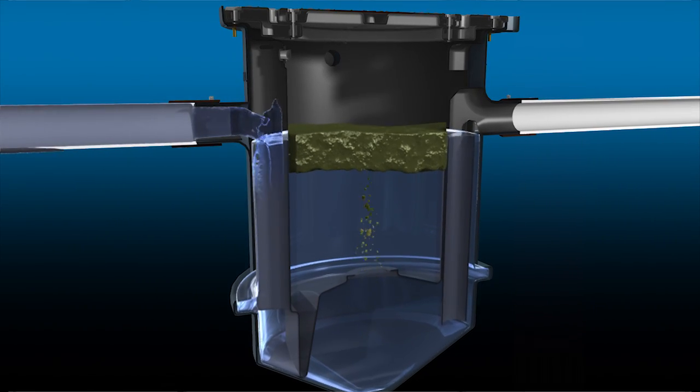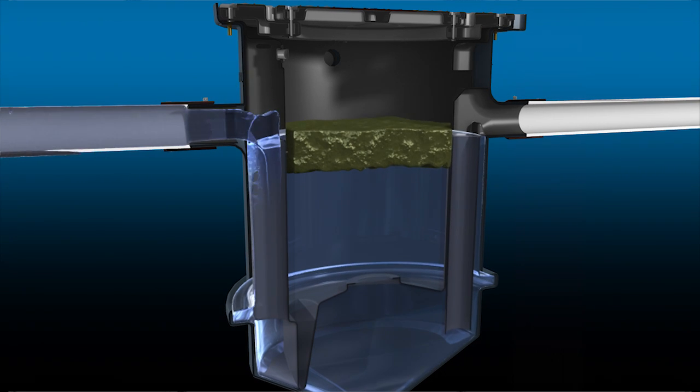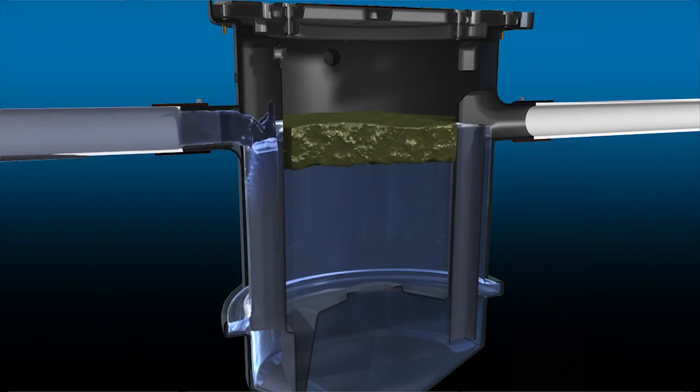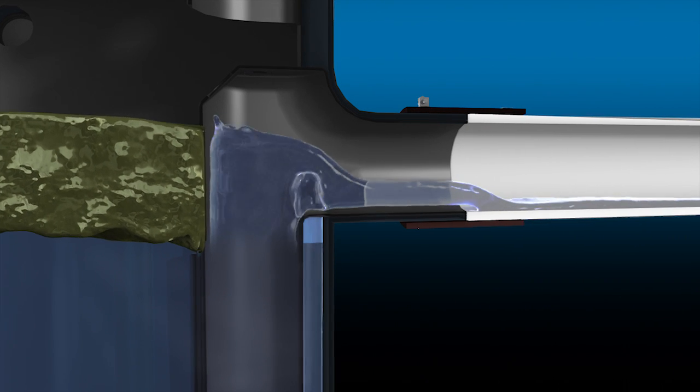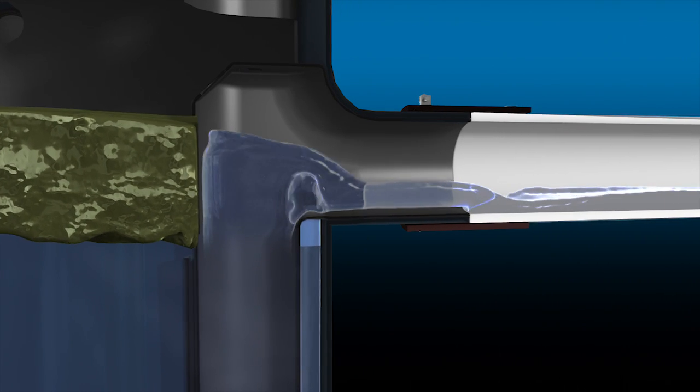As water and grease flow into the interceptor, the liquid level in the main tank rises. Once the liquid level rises sufficiently, clean water from the bottom of the tank exits the interceptor through the outlet pipe.